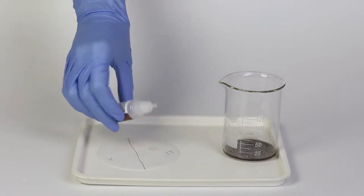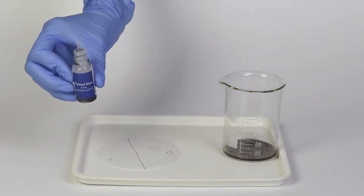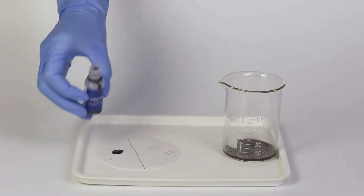Place a drop of potassium iodide on the half labeled KL and a drop of thymol blue on the one labeled T.